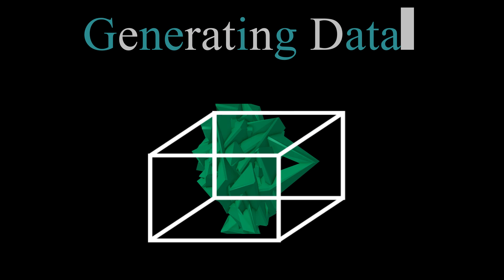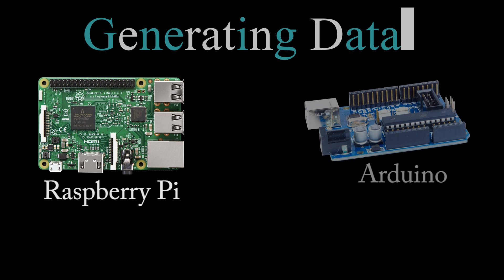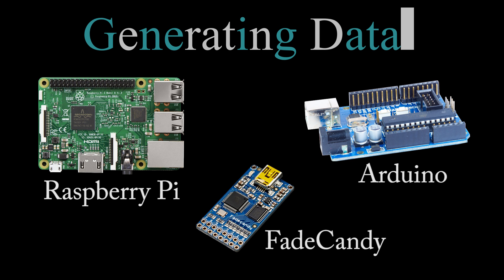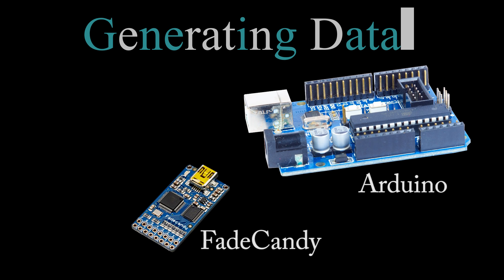So how do we generate this data signal? As stated before, most addressable LEDs, and the ones we will be using, require timing-specific protocols. Therefore, not all development boards are suitable. Specifically, the Raspberry Pi. Arduinos, on the other hand, work perfectly and are cheap.